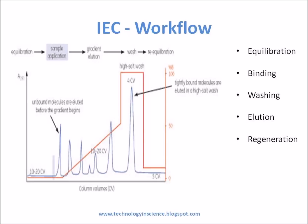Ion-exchange chromatography is performed in the following steps: equilibration, binding, washing, elution, and regeneration. If the elution process is carried out using the same buffer that was used in applying the sample, the elution is said to be isocratic. Alternatively, the elution may be carried out for a while with that buffer and then with another buffer — this is called stepwise elution. For the best results, the composition of the eluting buffer is changed as the elution progresses. The change is usually a change in ionic strength from a less dilute to a more concentrated buffer, or less frequently a change in pH. This elution process is called gradient elution, and this generally gives a much better separation of solute.